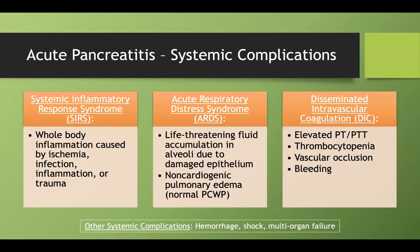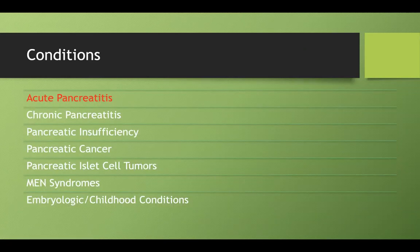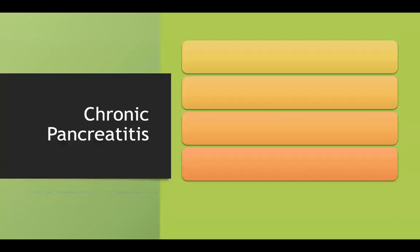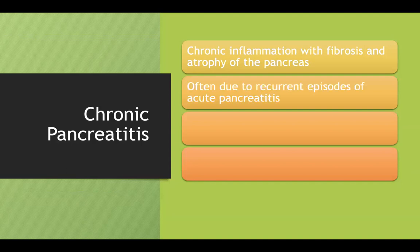Besides DIC, ARDS, and SIRS, severe acute pancreatitis can also cause hemorrhage, shock, and multi-organ failure. Now moving from acute to chronic pancreatitis: chronic pancreatitis involves chronic inflammation leading to fibrosis and ultimately atrophy of the pancreas, often from recurrent acute episodes, but also from idiopathic causes, alcohol abuse, or cystic fibrosis.